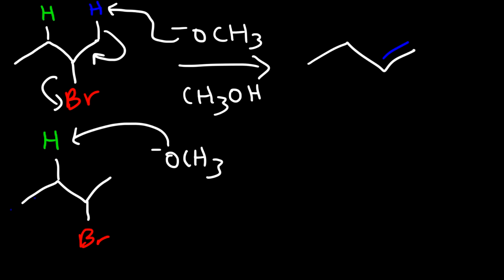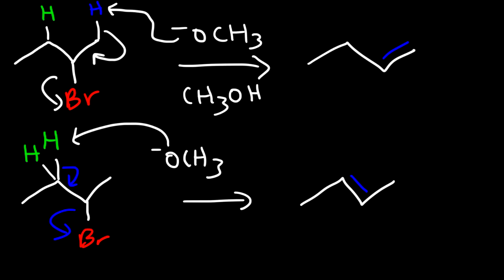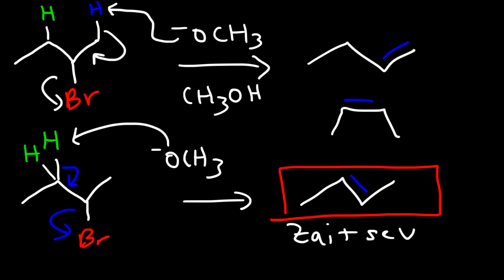Once the base grabs the hydrogen, the carbon-hydrogen bond breaks, those electrons form the pi bond, and the leaving group is expelled. We can get trans-2-butene. There are two green hydrogens — one leads to the trans-isomer and the other to the cis-isomer, giving a mixture of products. However, we get the Zaitsev product, the most stable alkene. Trans-disubstituted alkenes are more stable than cis, and a disubstituted alkene is more stable than a monosubstituted terminal alkene.